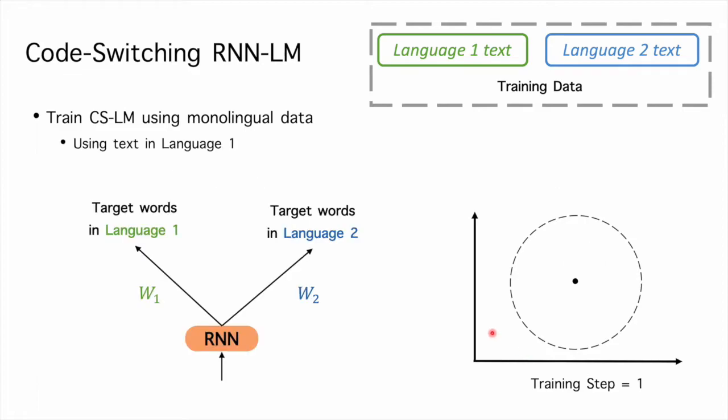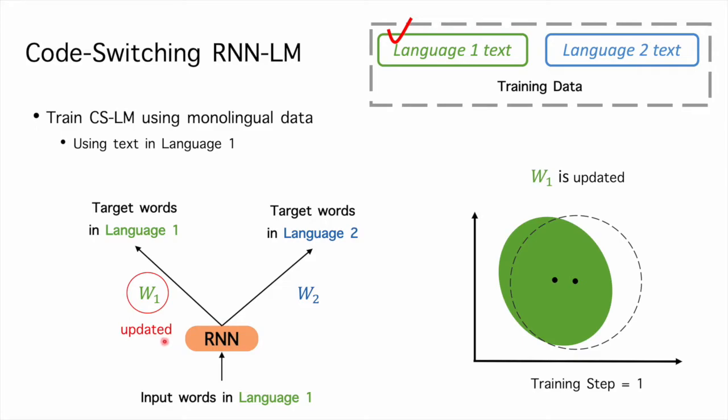When we start to train the code-switching language model, the input text would be sampled from the first monolingual set, and the W1 is updated. Or the input text would be sampled from the second monolingual set, and the W2 is updated.